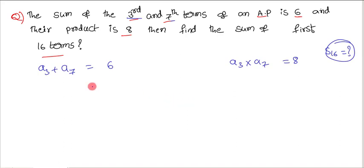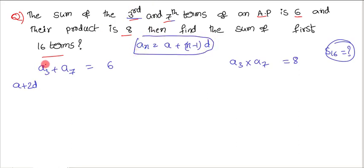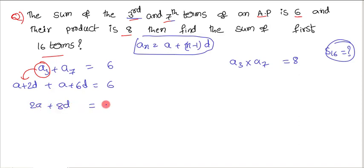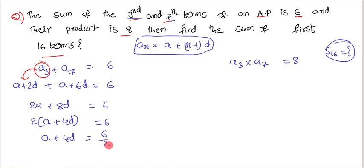Using the formula aₙ = a + (n−1)d, we can write a3 as a + 2d. Similarly, a7 can be written as a + 6d. So a3 + a7 = (a + 2d) + (a + 6d) = 6, which gives 2a + 8d = 6. Taking 2 as common, a + 4d = 3.